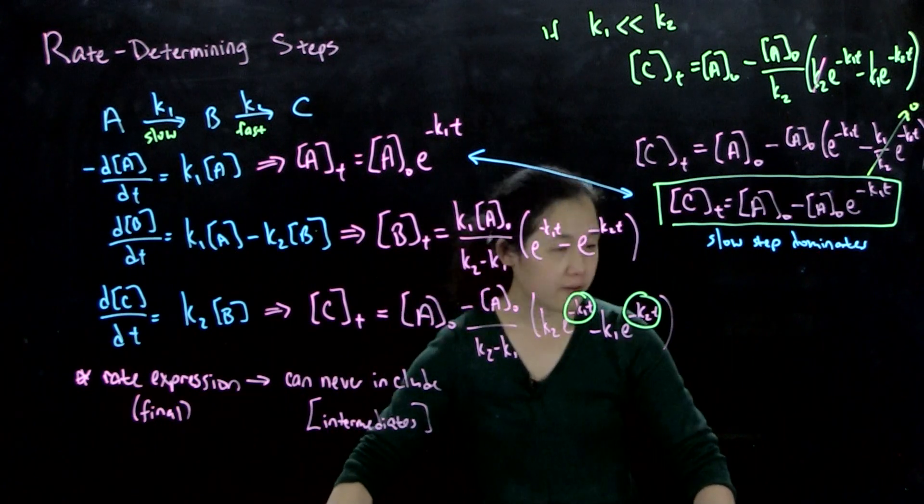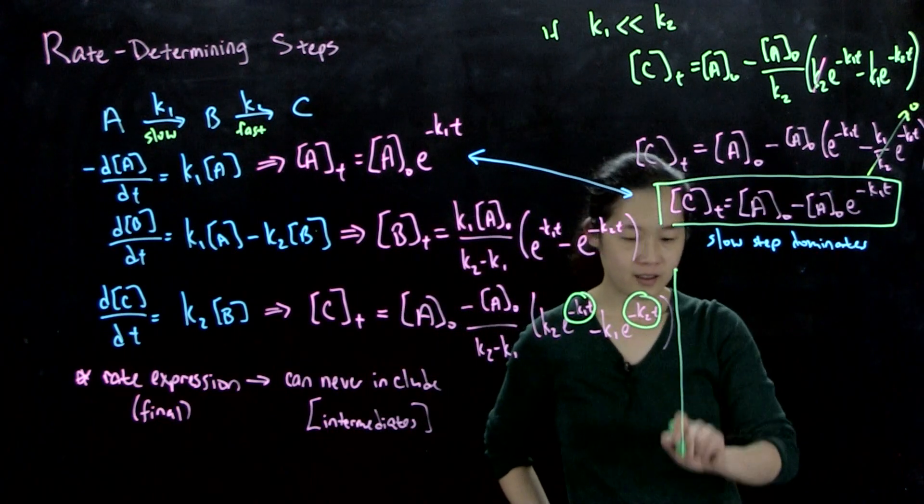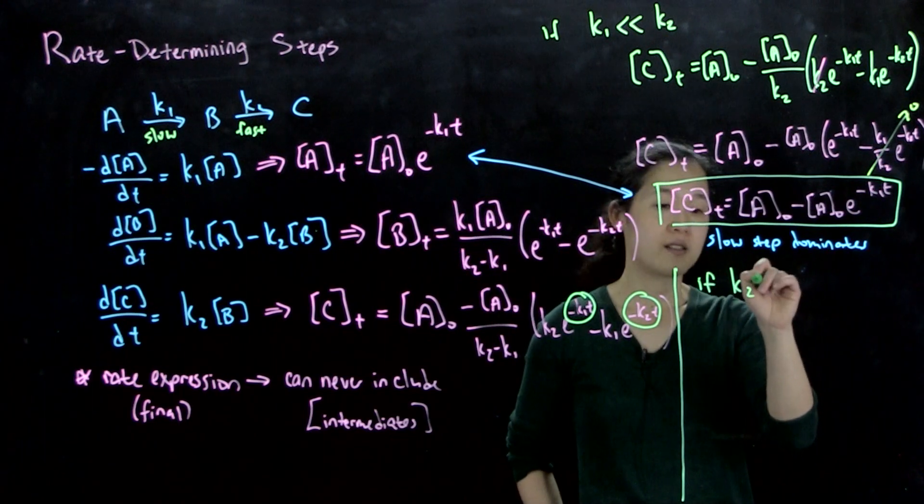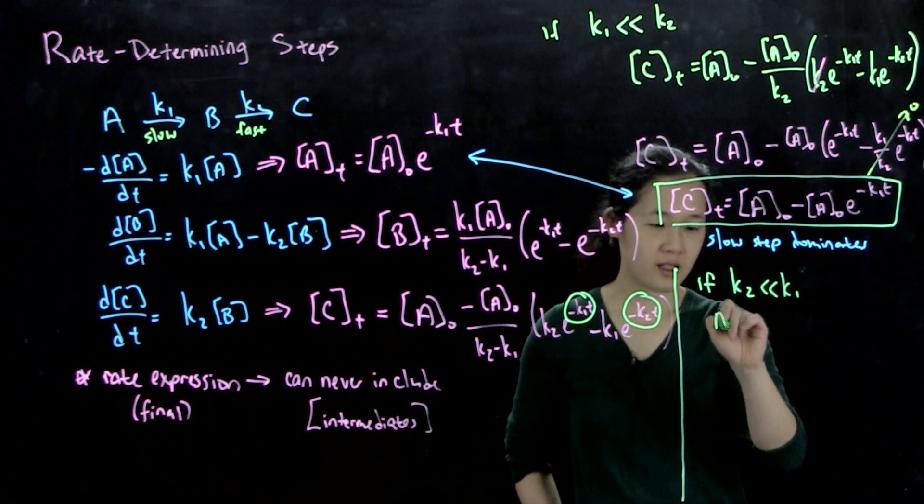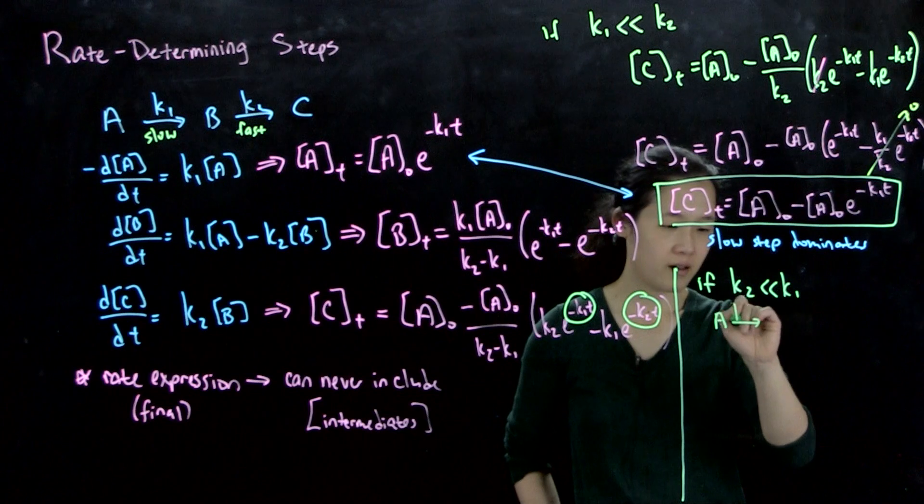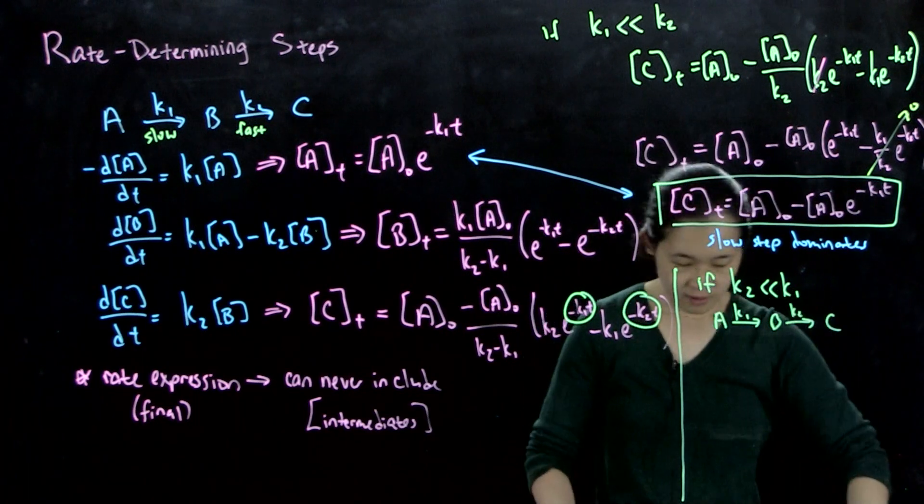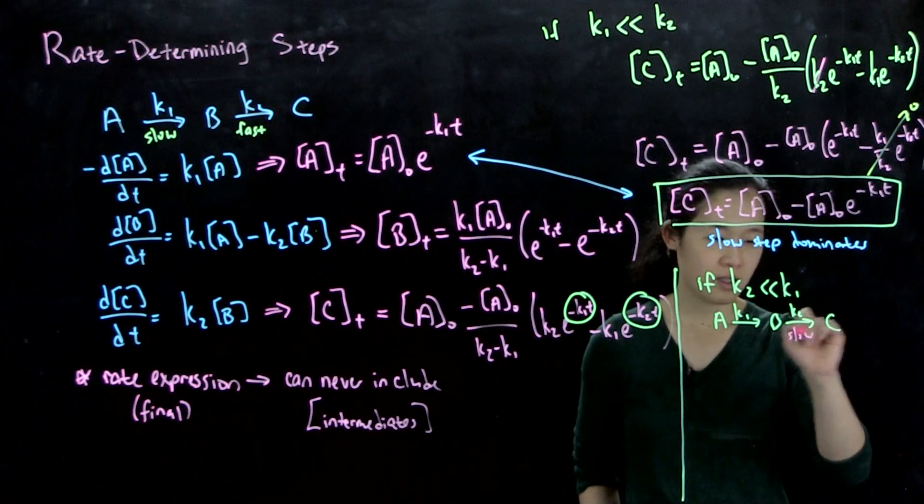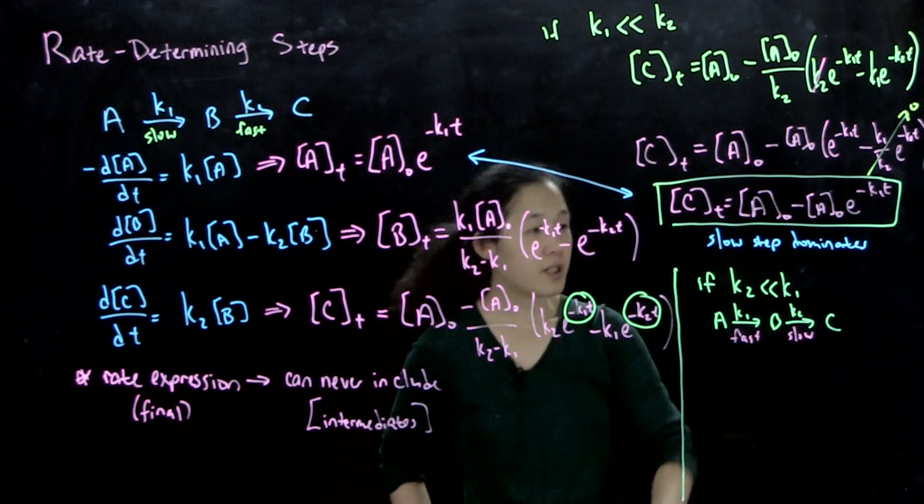Our second scenario for this kind of simplified example. If, on the other hand, k2 is much less than k1. So this is going to be A to B to C. So this will now be the slow step, and this will be the fast step. You can do the same approximations. I'll just write the answer.